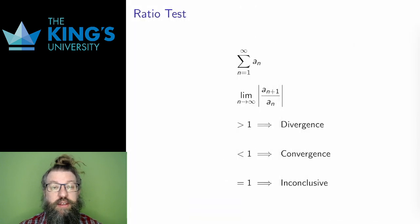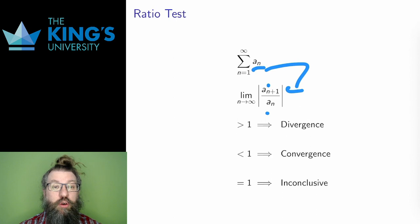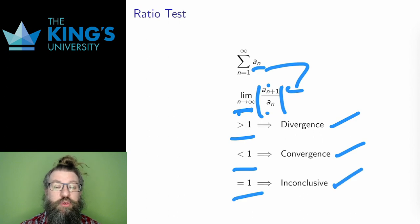Here is the second test for this video. I can consider the ratio of the terms of a series. So a_n+1 over a_n, and also with absolute value. Then I can take the limit of this ratio. If this limit is larger than 1, the series will diverge. If this limit is less than 1, the series will converge. And if this limit is exactly 1, the test is inconclusive.